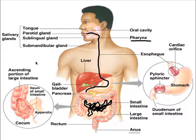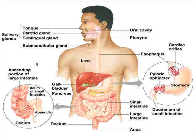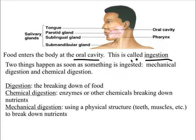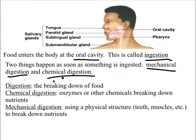Starting up here in the oral cavity: food enters through the oral cavity, and this is called ingestion — taking something into our body is ingestion. Two things happen as soon as something is ingested: mechanical digestion and chemical digestion. But first, let's break down what 'digestion' means.